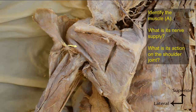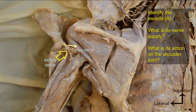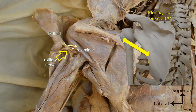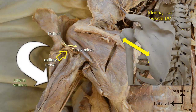Identify muscle A. What is its nerve supply and what is its action on the shoulder joint? The muscle is teres minor. It is supplied by the axillary nerve, similar to deltoid. This muscle, teres minor, extends from the lateral margin of the scapula to the inferior facet on the greater tubercle of the humerus. It is thus a lateral rotator of the shoulder joint. Remember that it is a member of the rotator cuff muscles.